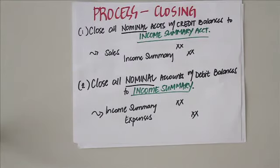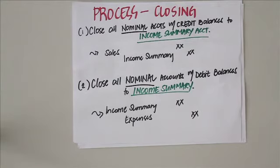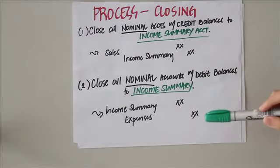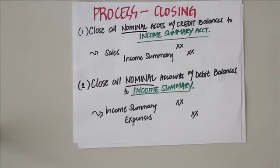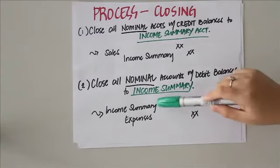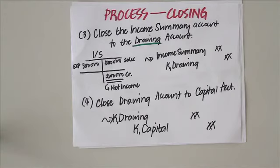Next, you need to close all nominal accounts with debit balances to the income summary. Nominal accounts with debit balances are typically your expenses, purchases, sales returns and allowances, and sales discounts. To close them, simply make a credit to whatever expenses were incurred — the opposite of their normal debit balance — and a debit to income summary.